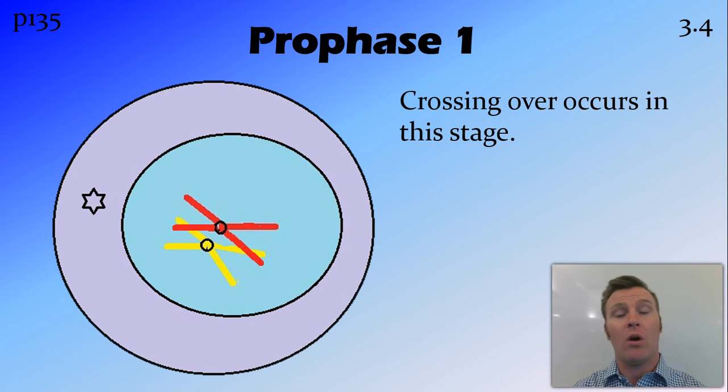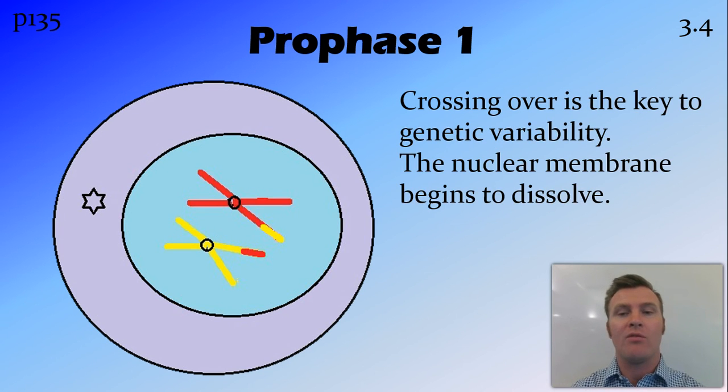Now, prophase 1 is where crossing over occurs. And crossing over is very important for genetic variability. And what happens is they swap a little portion of that DNA, do a bit of a dance, get it twisted, and swap some DNA. Now, after that happens, the nuclear membrane begins to dissolve.